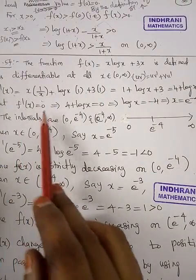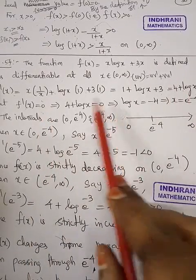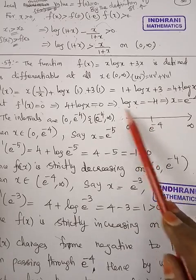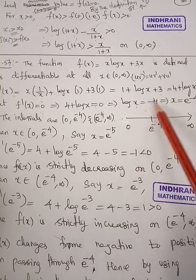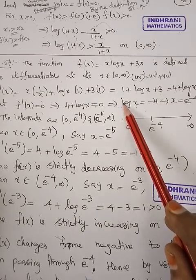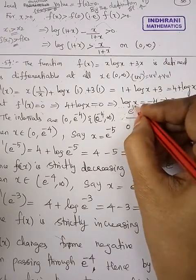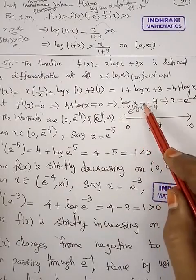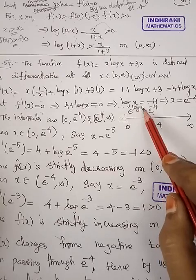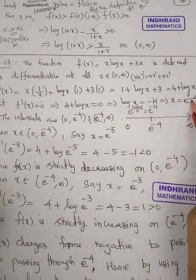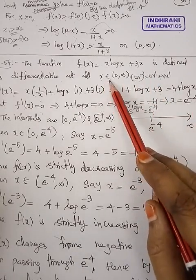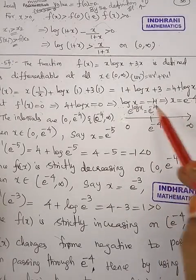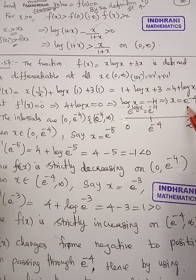Next, set f'(x) = 0, which gives 4 + log(x) = 0, which implies log(x) = -4. Taking the exponential on both sides, since e^(log x) = x, we get x = e^(-4). The function is defined on the open interval (0, ∞), and e^(-4) lies within this interval. So e^(-4) is our critical number, giving two intervals: (0, e^(-4)) and (e^(-4), ∞).